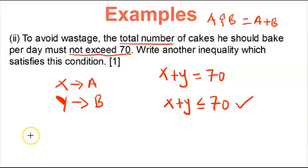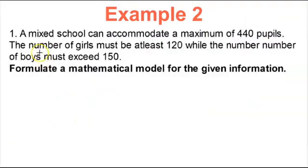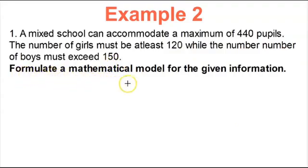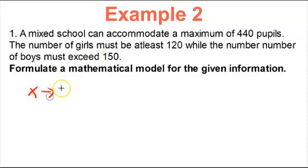Let us now look at example 2. A mixed school can accommodate a maximum of 440 pupils. The number of girls must be at least 120, while the number of boys must exceed 150. They have not given us any letters, so we need to formulate a mathematical model for the given information. Let's assign letters: we are going to use X to represent boys, then Y to represent girls.